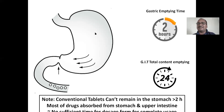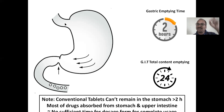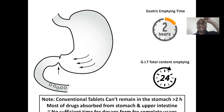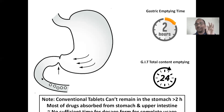Within two hours, whatever content is present in the gastric or stomach will be pushed into the intestine. This entire system is called the gastrointestinal tract, GIT. The total GIT transit time is 24 hours — whatever you take in the morning will be eliminated by the next morning.